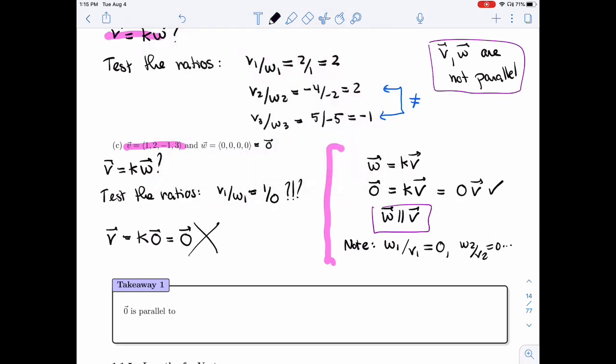The zero vector is parallel to every vector V in Rn.